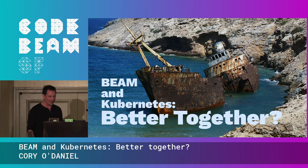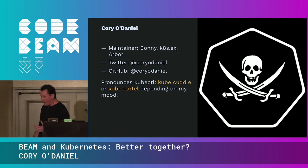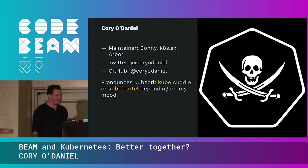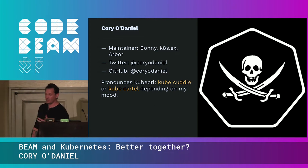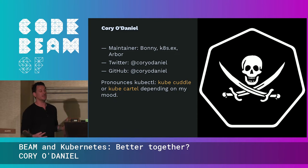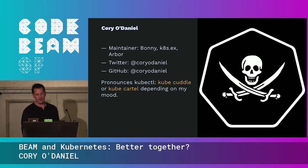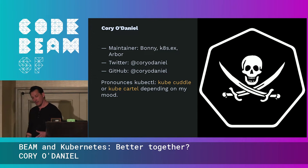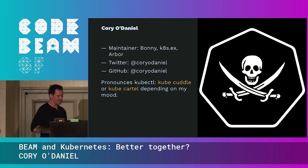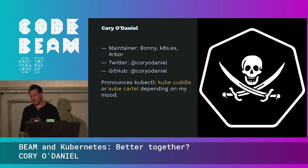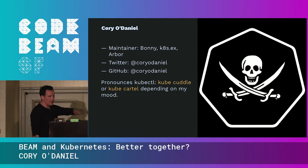Despite the plague and all, thanks for coming out. I appreciate it. I hope everybody makes it home safe. I'm pretty excited about Kubernetes and Elixir and Erlang. I'm the maintainer of a project called Bonnie, which is an Elixir-based Kubernetes development framework, so you can actually extend Kubernetes by writing Elixir. Also the maintainer of KTX, which is an Elixir client for Kubernetes, and also Arbor, which is an adjacency list library for Ecto. You can find me on Twitter and GitHub at Corey O'Daniel.